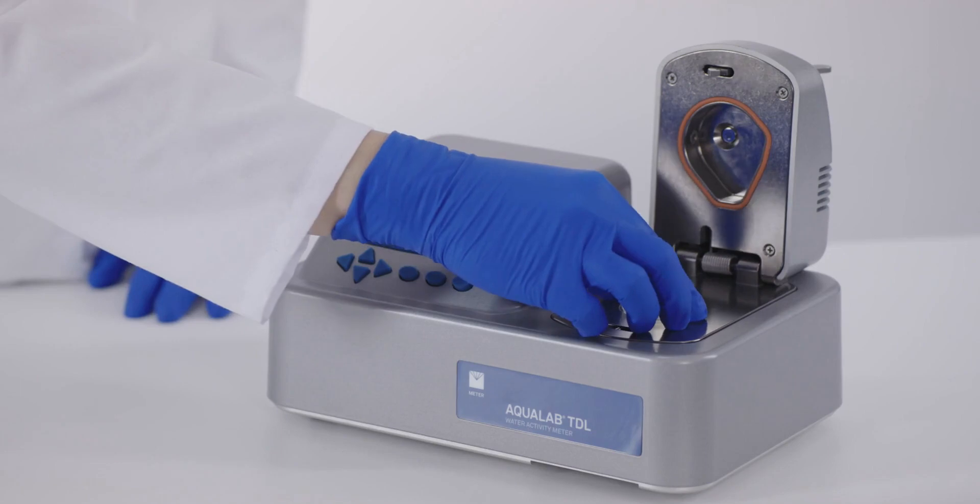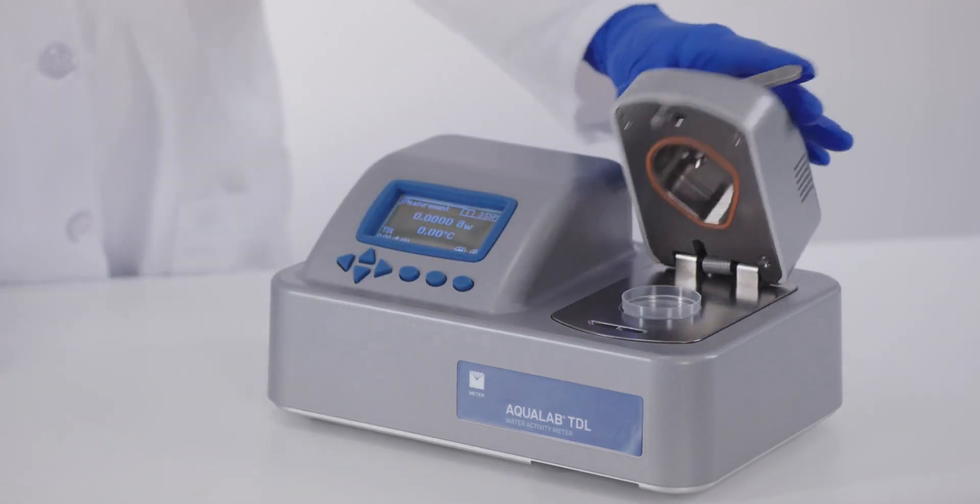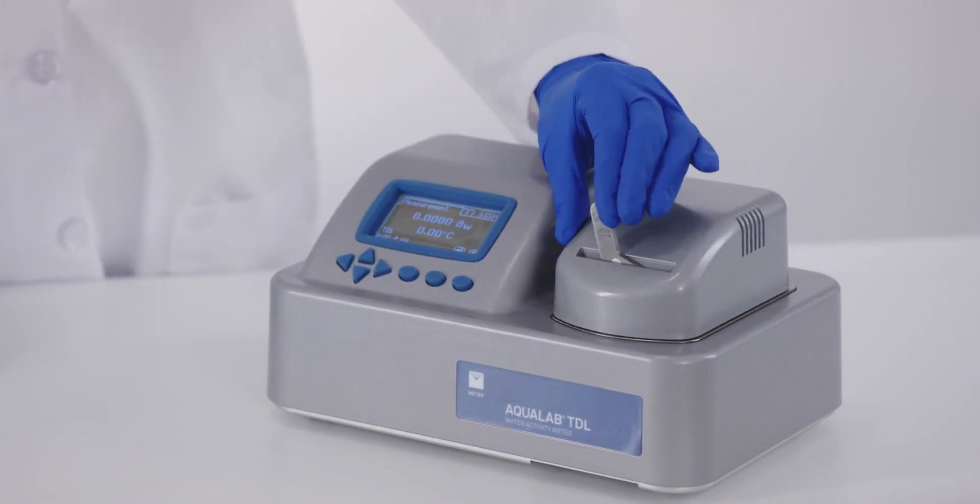Place the cup in the instrument, close the lid, and move the lever to the left to start the reading. When the reading is finished, check to be sure it's within 0.005 of the verification standard's stated value.